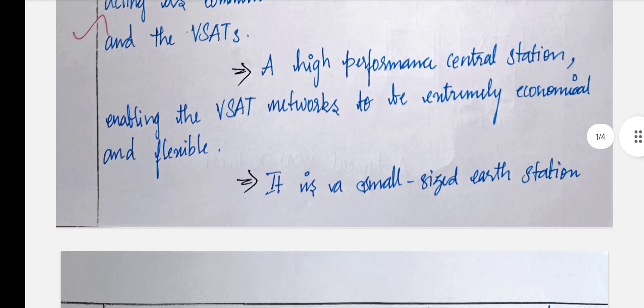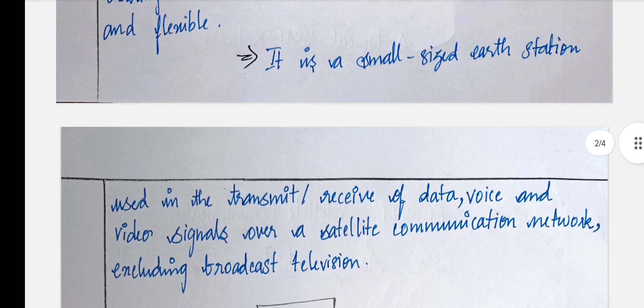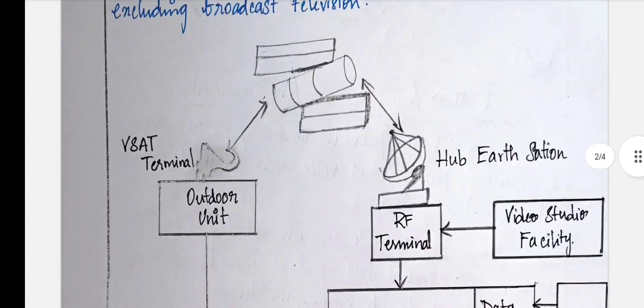The VSAT is a high-performance, small-sized earth station used to transmit and receive data, voice, or video signals over a satellite communication network, excluding broadcast television.